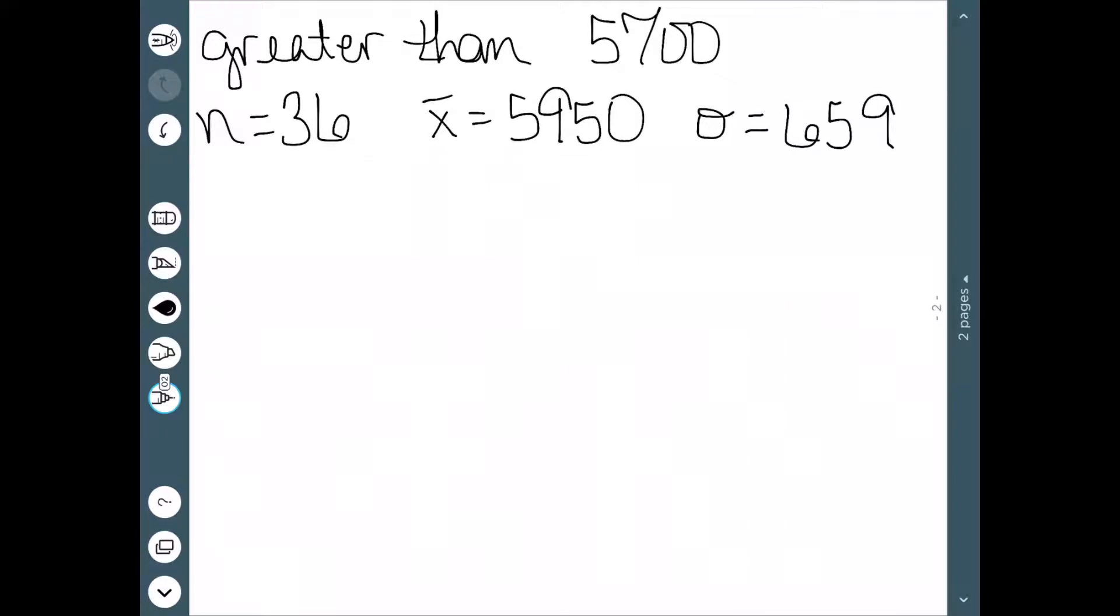Let's suppose that you read that the average cost for tuition at a four-year public college is greater than $5,700. You want to test if this is accurate. So you are going to sample a random set of colleges. Let's say you sample 36 colleges. And you find that their average is 5,950. And you do some research and find that the population standard deviation is 659. And we want to test this claim at the .05 level. We want to know, is it greater? And we're going to use the p-value method.